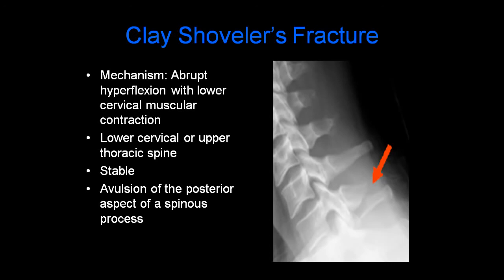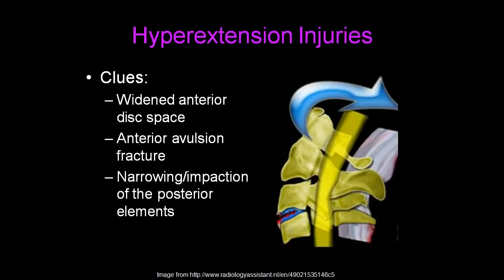A clay shoveler's fracture is a fracture of the posterior aspect of a spinous process, most commonly C7 or T1. The mechanism is abrupt hyperflexion with lower cervical muscular contraction. This is considered a stable injury. The clues to a hyperextension injury are widened anterior disc spaces, an anterior avulsion fracture of a vertebral body, and narrowing or impaction of the posterior element.